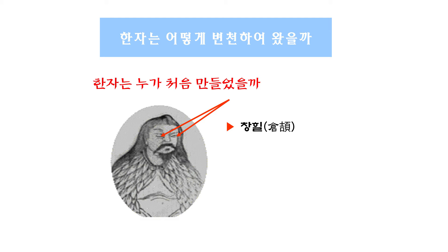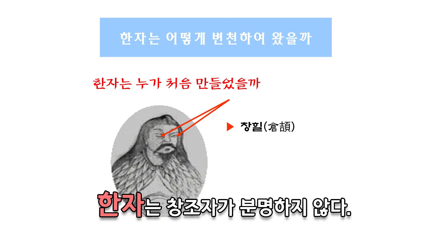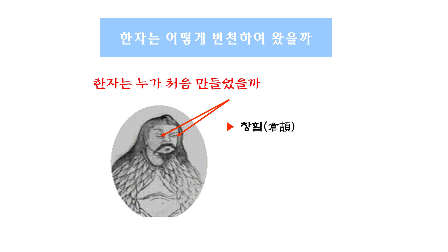한글, 훈민정음은 누가 언제 만들었는지 명확하게 압니다. 1443년 세종대왕이 집현전 학자들에게 엄청난 연구비를 줘서 만들었죠. 한자는 정확하게 언제 누가 처음 만들었는가에 대한 명확한 기록이 없습니다. 많은 중국 사람들은 이것이 신화와 전설인 것을 알면서도 한자를 누가 만들었냐 하면 창힐이 만들었다고 대답합니다.